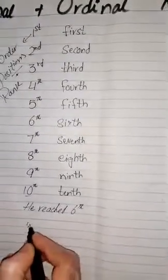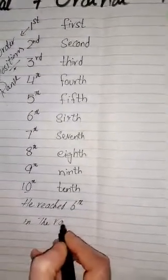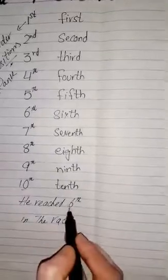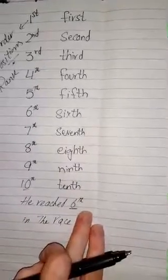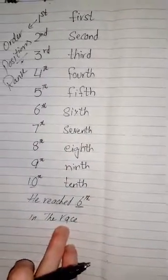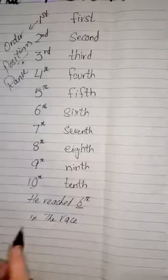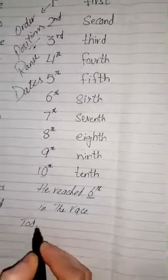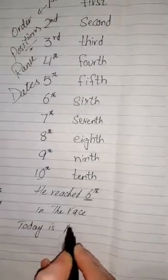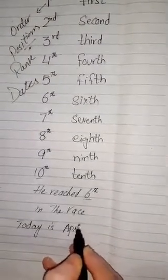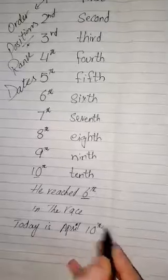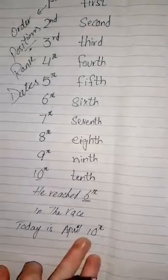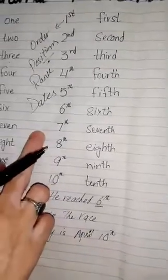He read sixth in the race. Here sixth is the position of a boy who got sixth position in the race. We also use ordinal numbers for dates. Let's suppose today is April 10th, so 10th is a date, so we also use ordinal numbers for days.